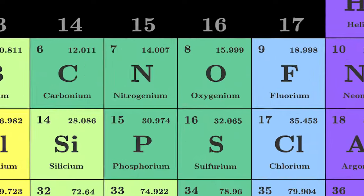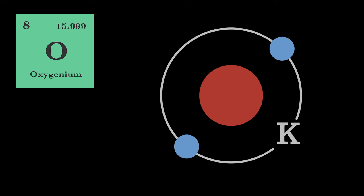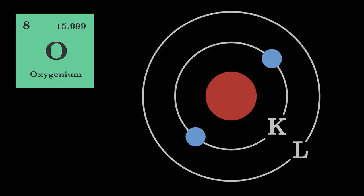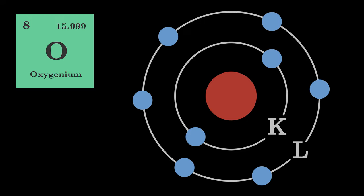The oxygen atom has eight electrons. Two are on the K-shell. The L-shell can hold a maximum of eight electrons, so the remaining six electrons are added to it.